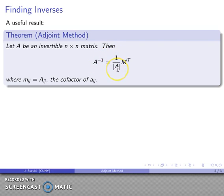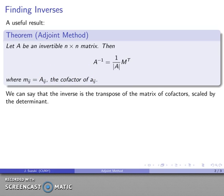I can multiply 1 over the determinant of A times the transpose of some new matrix M. This new matrix M is going to have entries that consist of the cofactors of each entry in my matrix A. A concise way of expressing this is: the inverse is the transpose of the matrix of cofactors, scaled by the determinant.